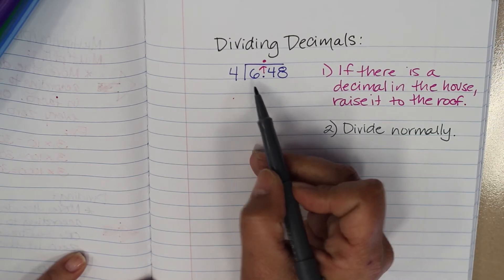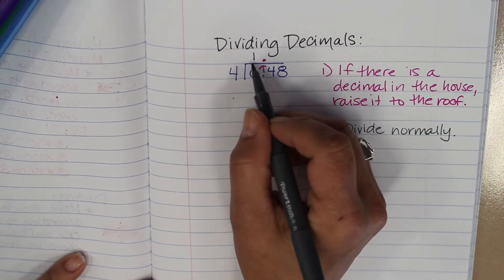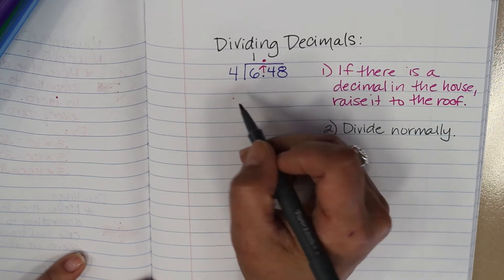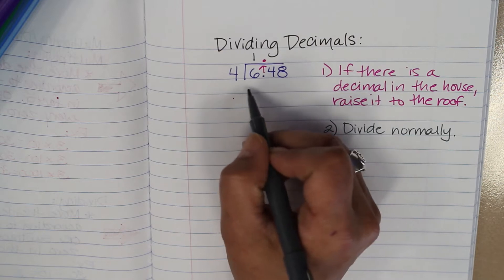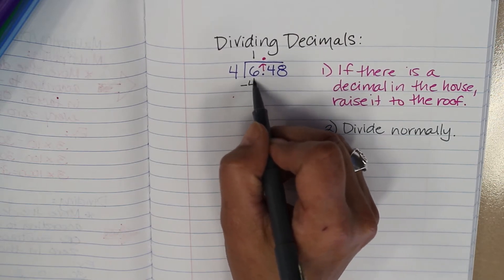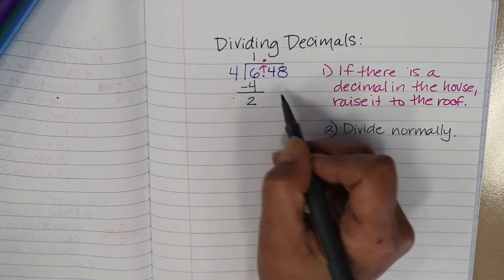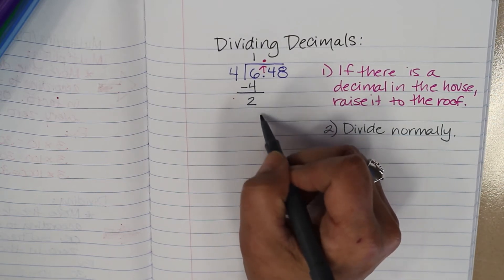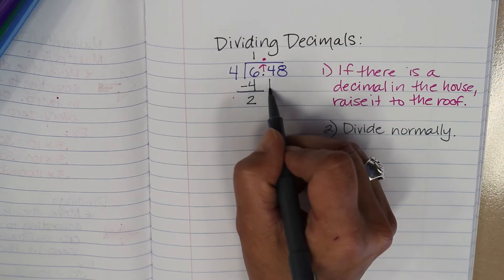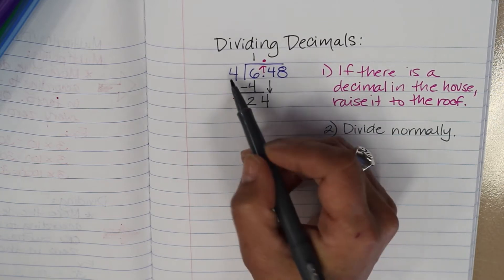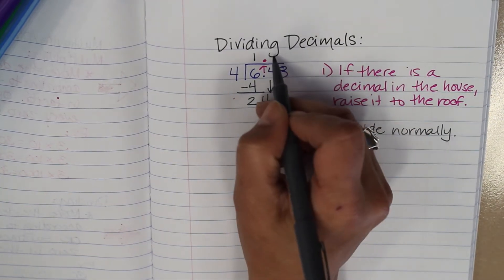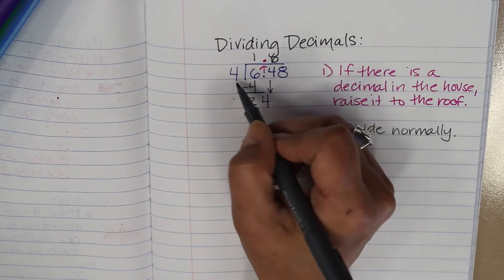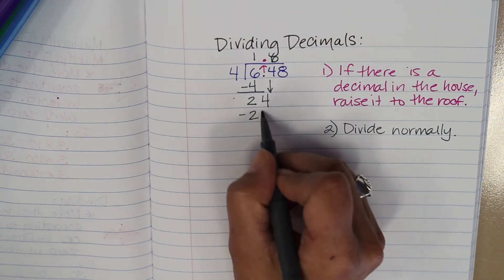4 would go into 6 one time. Then I would do 4 times 1 — just like Miss Salhever or Miss Hampton told you on the video — and I would subtract 4 times 1 from my 6, which gives me 2. I'm going to now bring my 4 down. Then 4 goes into 24, 6 times. And 6 times 4 is 24 again.